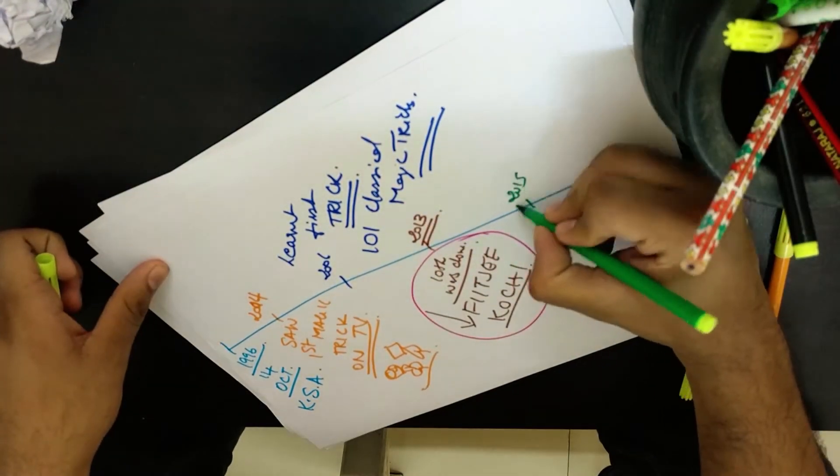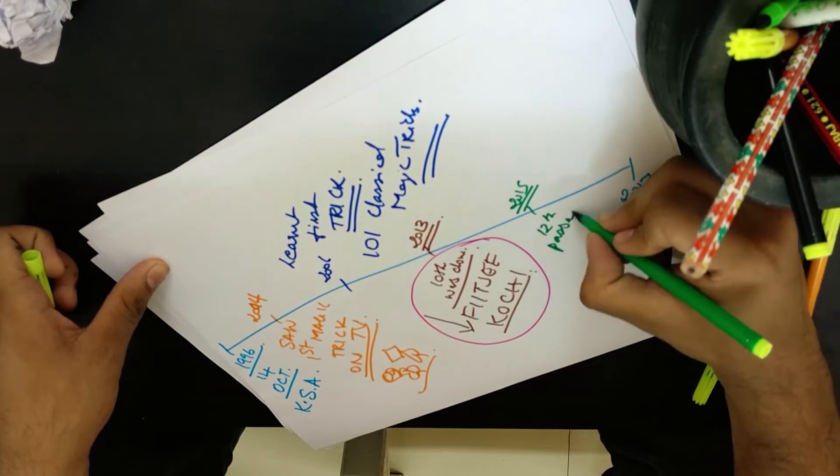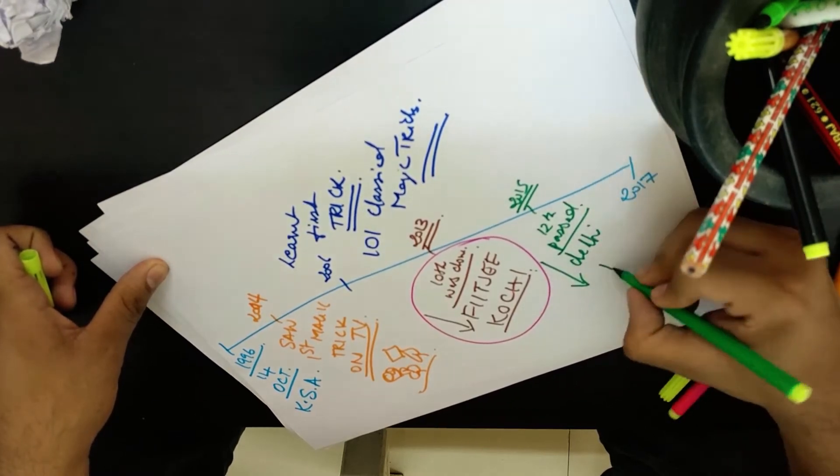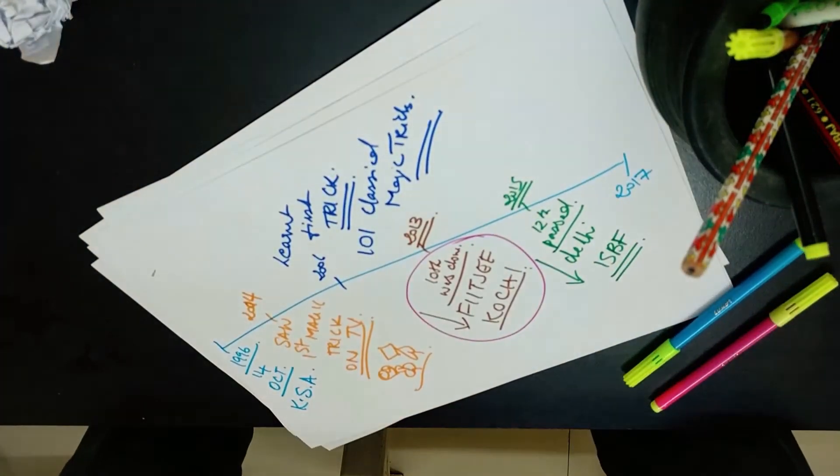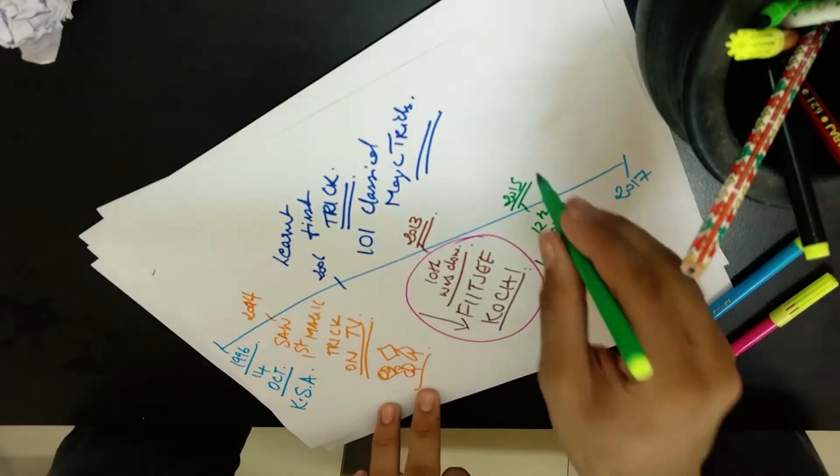In 2015 I passed out of 12th and joined ISBF in Delhi for college. Everything else that's happened afterwards you sort of have an idea. But the Chicago Story takes place between 2013 and 2015.